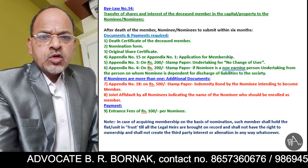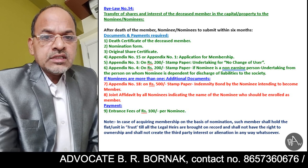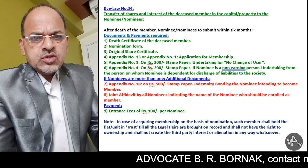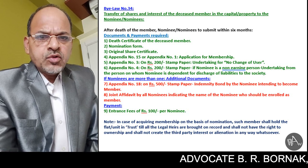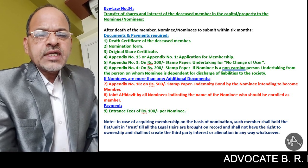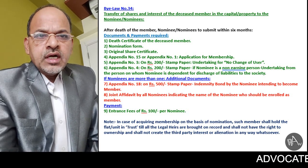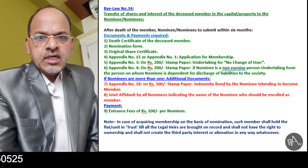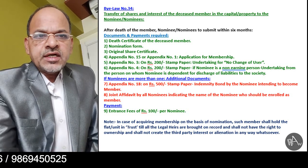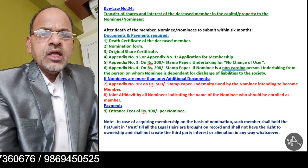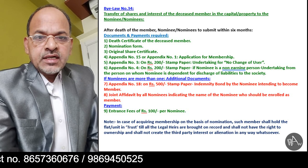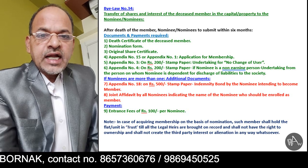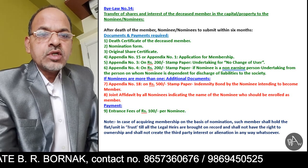Which documents are required to be submitted by the nominee or nominees? As per the provisions of bylaw number 34, they are to be submitted within six months, though the society can take some liberal stand. First of all, death certificate of the deceased member — to give intimation to the society that the member is deceased. Then nomination form — having the endorsement remark that it was put before the managing committee meeting and registered in the nomination register — that copy of the nomination form is also required to be submitted.